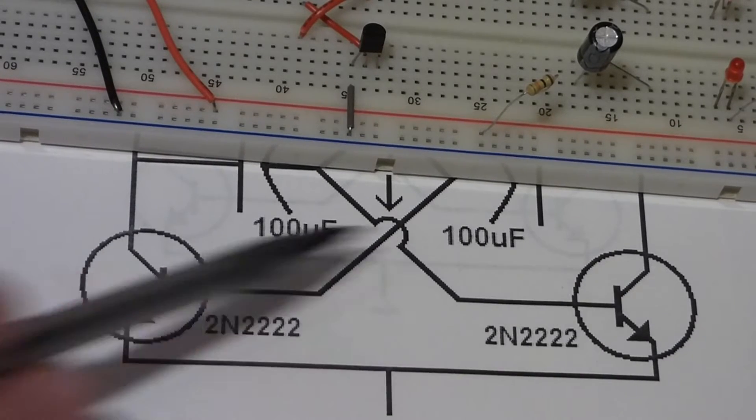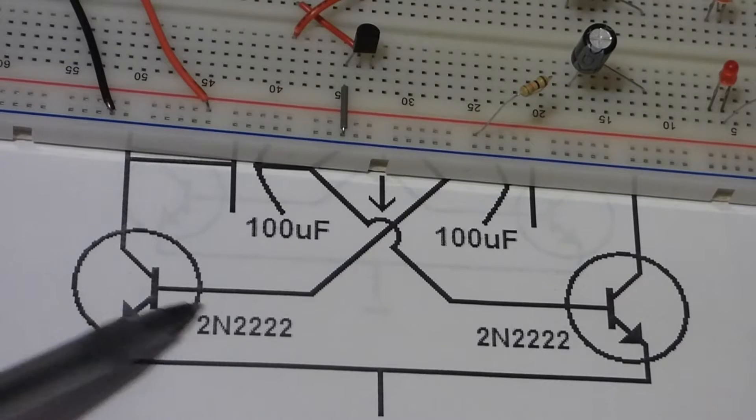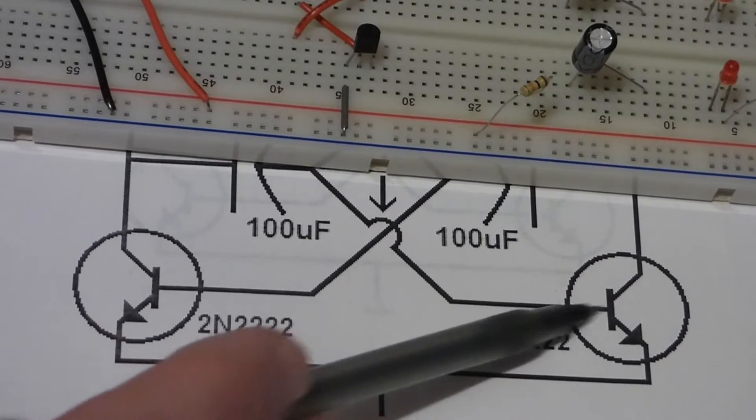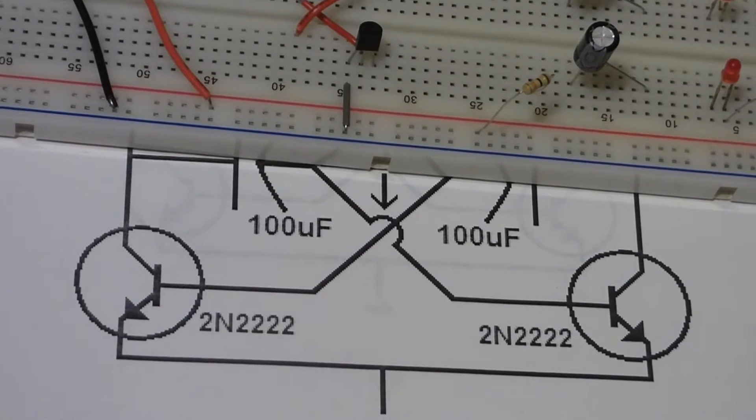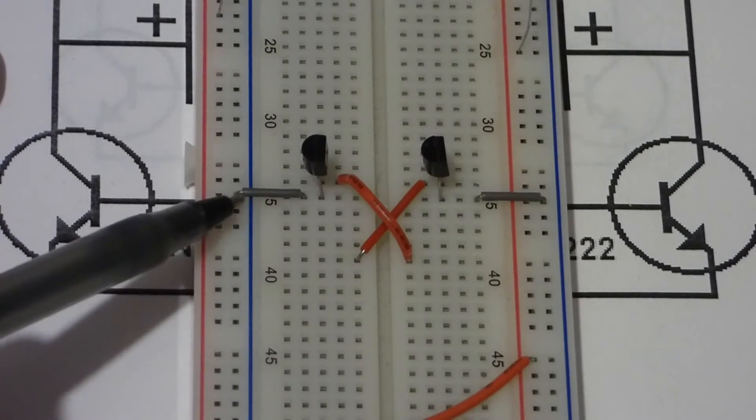Now, it doesn't matter which way it's facing as far as the schematic is concerned. Usually, you just point it in the direction where the wire is coming to the base. And also with this circuit, the emitter goes right to ground.